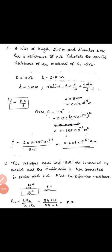Welcome students. Polytechnic 2021 revision — Physics, third unit. We will discuss problems. In the first problem: a wire of length 2.5 meter and diameter 1 millimeter has a resistance of 2 ohm. Calculate the specific resistance of the material of the wire.